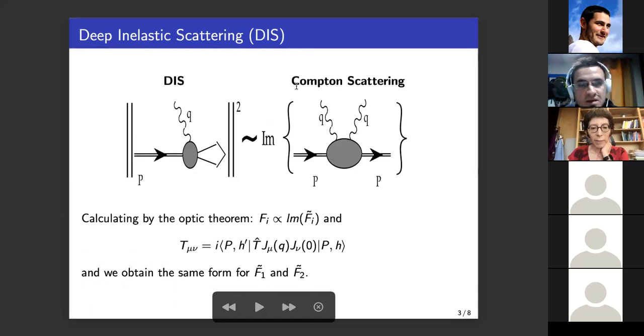Next please. Okay, we have a relationship between the DIS process and Compton scattering through the optical theorem, which says that the modulus squared of the amplitude in the DIS process is proportional to the imaginary part of Compton scattering. And we have also a relationship between the structure function in the DIS and the structure function F tilde in Compton scattering. And also we have the hadron tensor but in Compton scattering where we have two electromagnetic currents inside the hadron, and we obtain the same form of F_1 tilde and F_2 tilde.